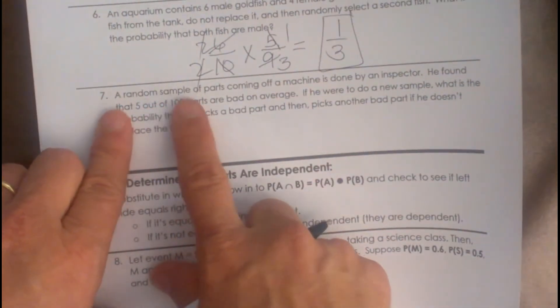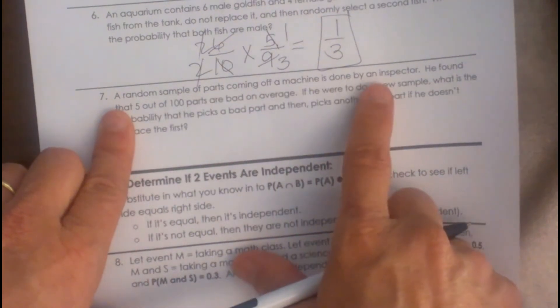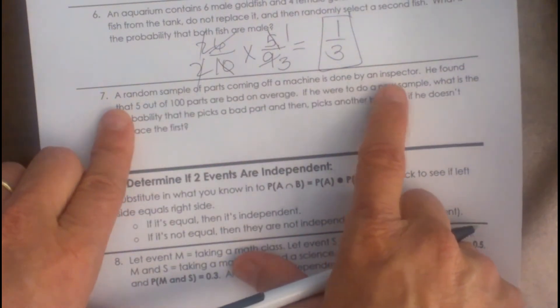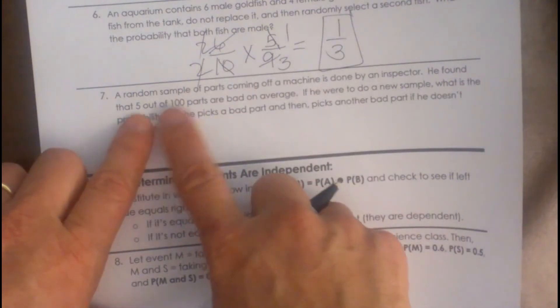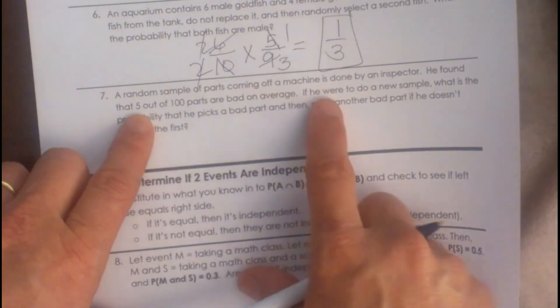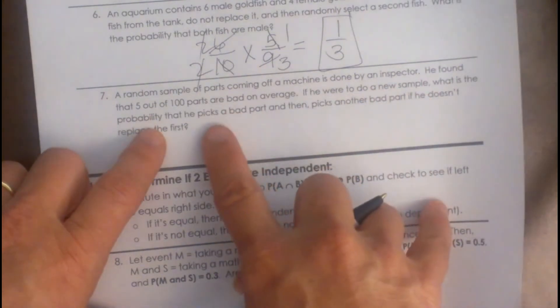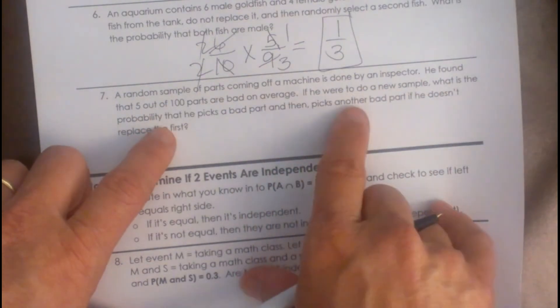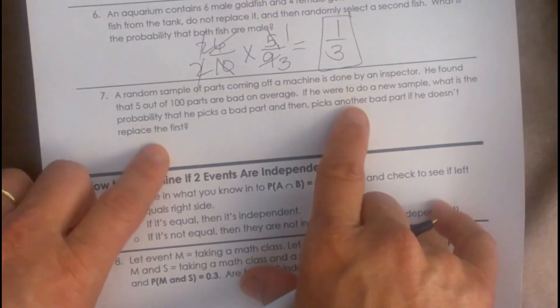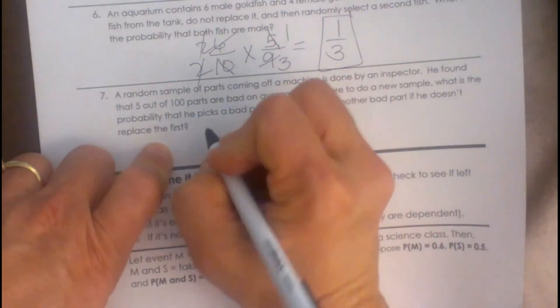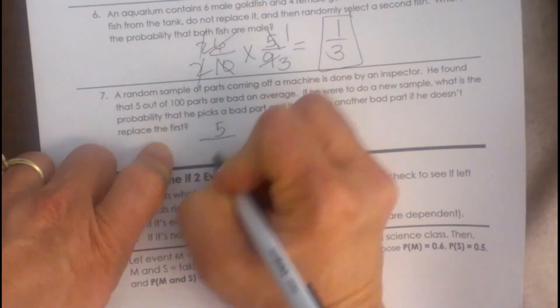A random sample of parts come off a machine and is checked by an inspector. He found 5 out of 100 parts are bad. If he were to do a new sample, what is the probability that he chooses a bad part and then picks another bad part if he doesn't replace the first one? Well, the first one is 5 out of 100.